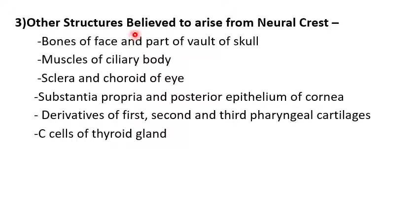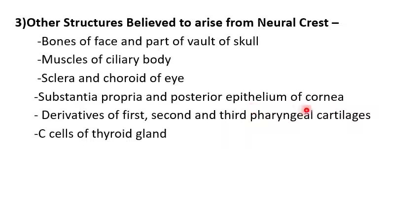Other structures believed to arise from neural crest cells include: the bones of the face and part of the vault of the skull, muscles of the ciliary body of the eye, sclera and cornea of the eye, derivatives of the 1st, 2nd, and 3rd pharyngeal cartilages, and C cells of the thyroid gland.